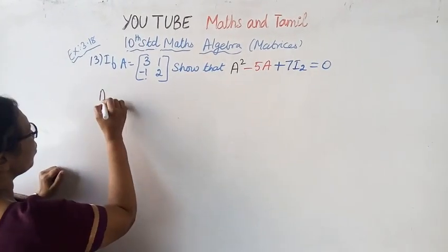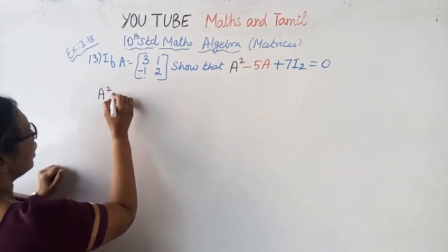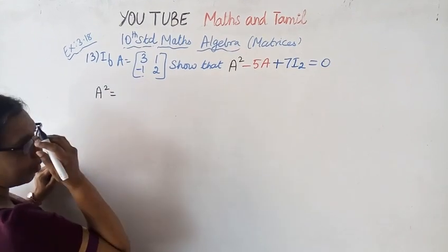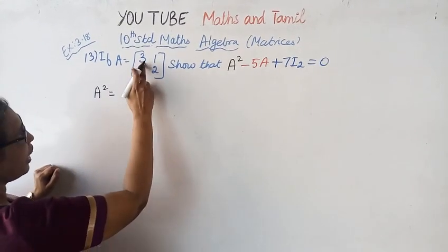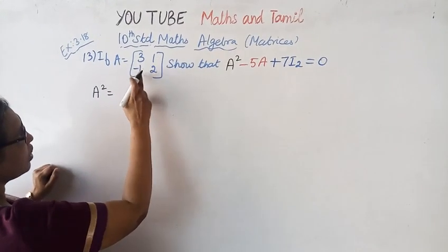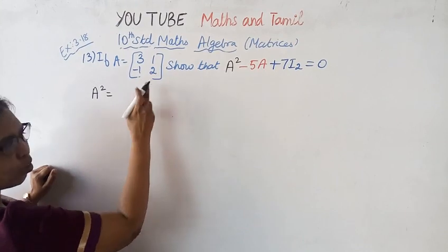First, let us compute A squared. A squared is equal to [[9, 1], [1, 4]].